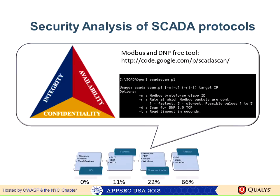Many SCADA security protocols were not developed with security in mind. There is basically no confidentiality, integrity, or availability built into the protocol. For example, if you use Modbus to tell the server to lower the temperature of a connected device, it will just do it — no credentials asked, no authorization check. These things are not built into SCADA protocols because they were designed 30 years ago for closed environments.